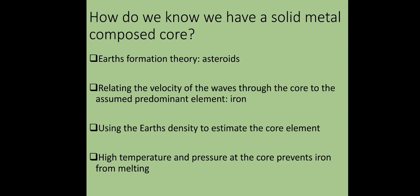Secondly, we relate the velocity of the waves with the predominant element, in this case iron. The velocity of waves changes depending on the properties of that material. The measured P wave velocity is close to that of iron measured at suitable temperature and pressure.